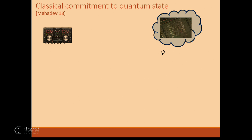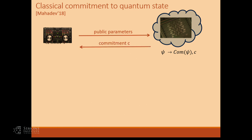The quantum prover has a quantum state. The scheme is based on the hardness of the learning with errors problem. First, there are some public parameters — you need to instantiate the learning with errors problem and tell the prover about it. Given the public parameters, the prover has the ability to perform a certain quantum operation on its quantum state that results in two things: another quantum state that is sort of the quantum part of the commitment, and a classical string that is the classical part. Because our verifier is classical, the prover can only send back the classical part.